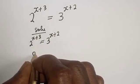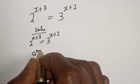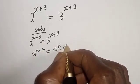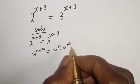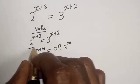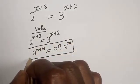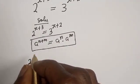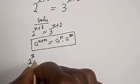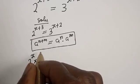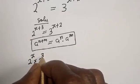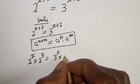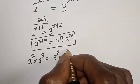If you have a raised to power n plus m, this is equal to a raised to power n multiplied by a raised to power m. Applying this rule, we can write 2 raised to power x multiplied by 2 raised to power 3, is equal to 3 raised to power x multiplied by 3 raised to power 2.